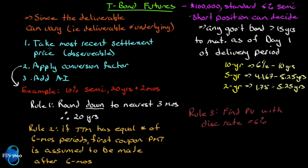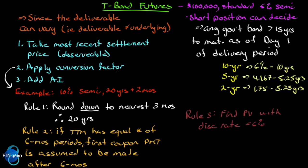The first thing we need is a price — the most recent settlement price on the T-bond futures contract. That price reflects a $100,000 standard six percent semi-annual government bond. We apply a conversion factor to that settlement price, add any accrued interest, and that's what the short position would receive once they deliver the bond.